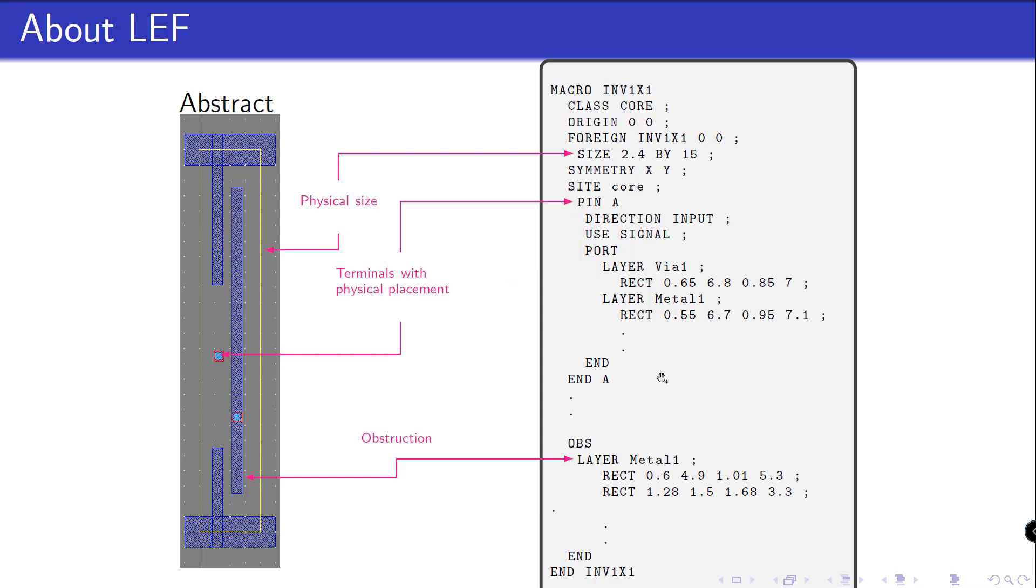Also it provides the location of all the metal tracks and wires in the layout of standard cell, which we technically call it as obstruction. And this obstruction part basically helps the place and routing tool.